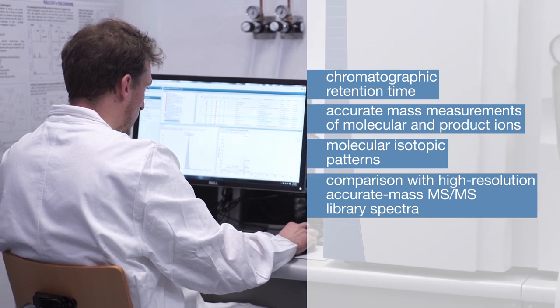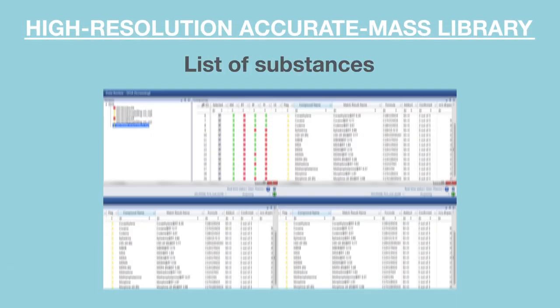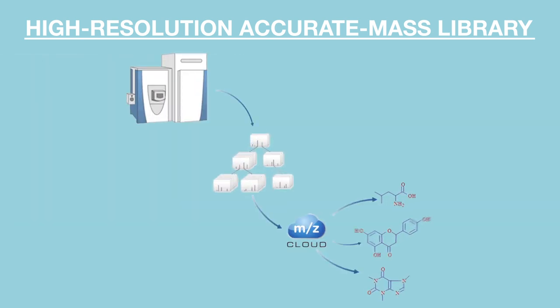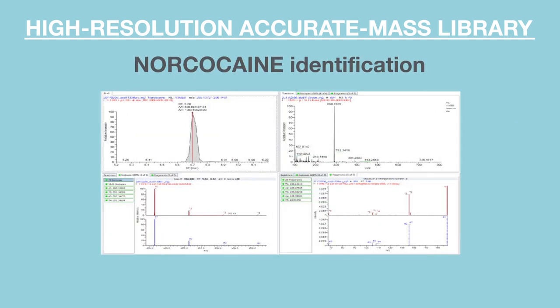The LIATF developed a database of compounds and metabolites of forensic toxicology interest, which includes compound names, chemical formulae, LC retention times, molecular and product ion exact masses, and isotopic patterns.